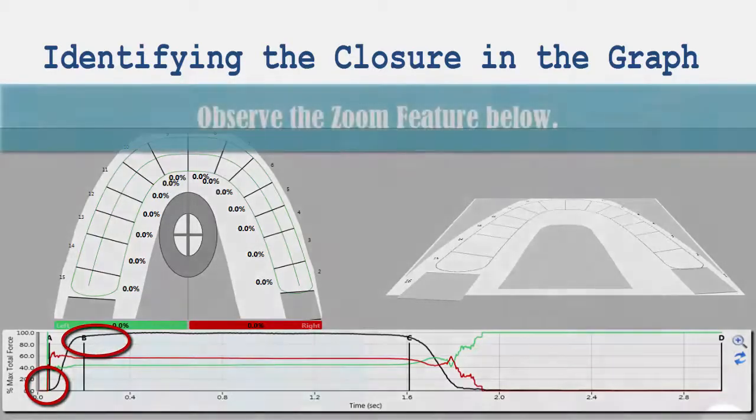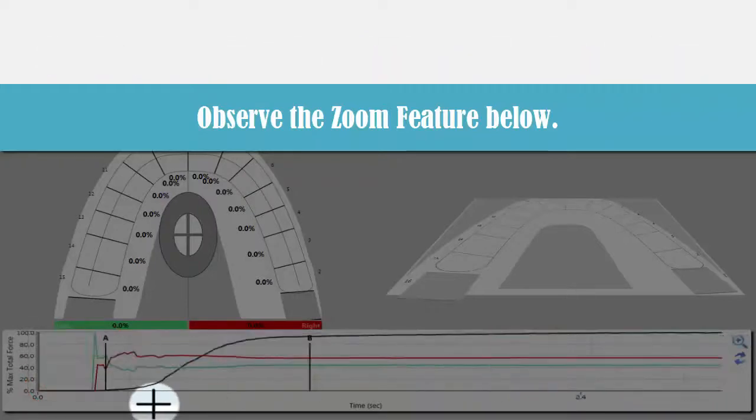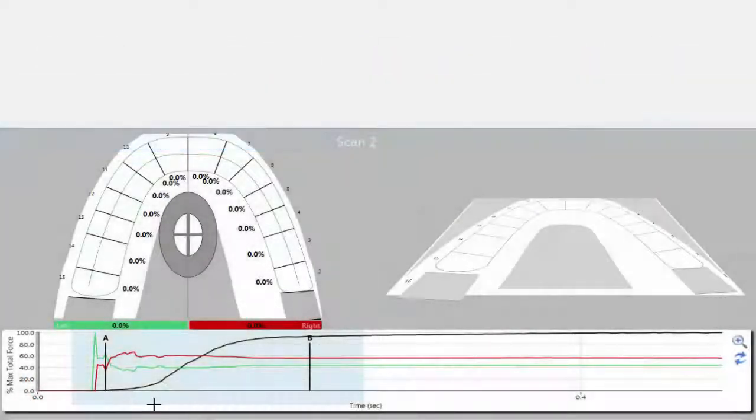Watch as we use the zoom feature to focus in on this area. First, click on the magnifying glass, and then click and drag a box around the beginning of the graph.